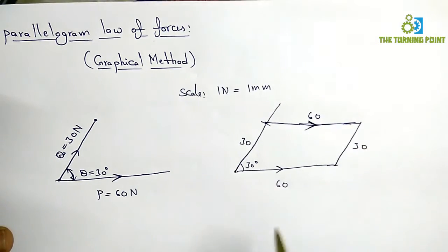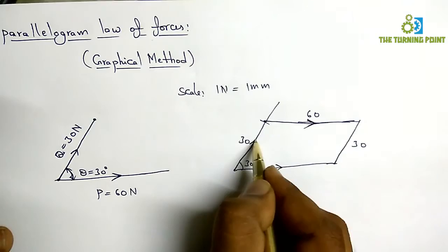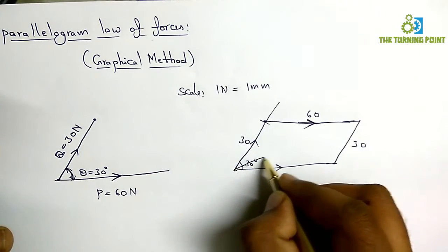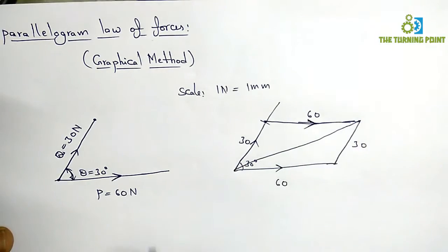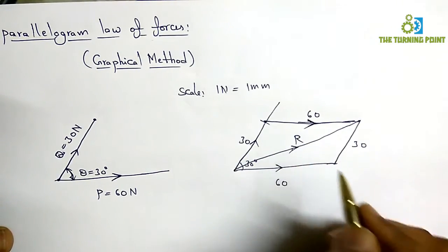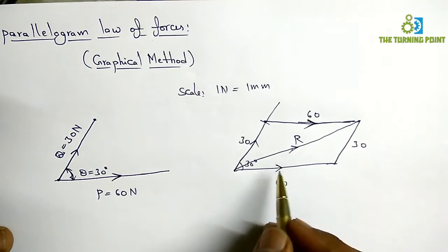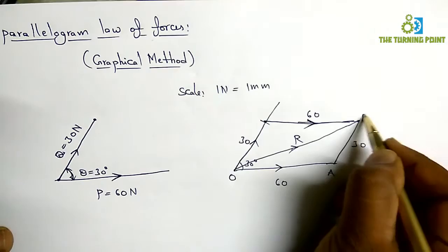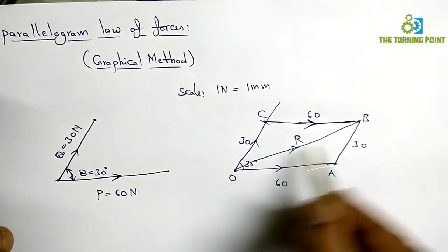If two forces are represented as the adjacent sides of a parallelogram, then the diagonal passing through the intersection of those two forces will represent the resultant. To find the resultant magnitude, I need to measure the distance between the points O and B.